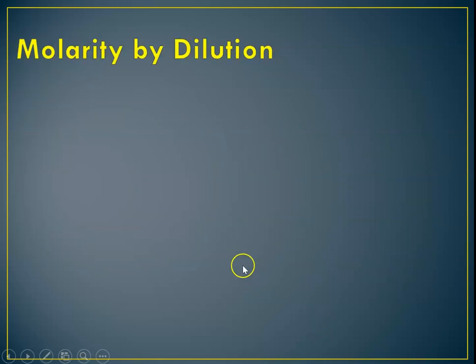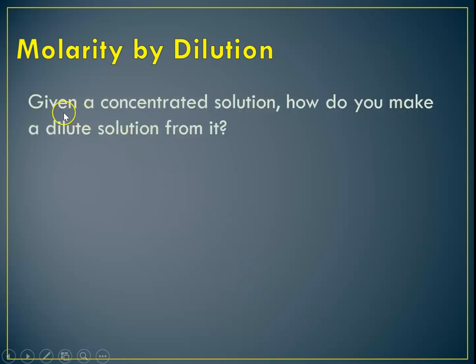So the second kind of problem that we solve with molarity is called molarity by dilution. So given a concentrated solution, how do you make a dilute solution from it? And why would you want to do this? Well, it turns out that most things that we get in the lab of acids and bases are delivered as concentrated solutions. And so what you have to do is you have to take a little tiny amount of the concentrated stuff and dilute it to get the right molarity. So that equation looks like this. M1 V1 equals M2 V2, where molarity is capital M and V is volume.